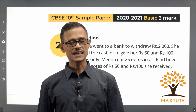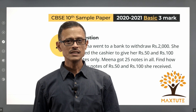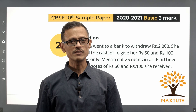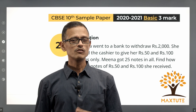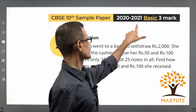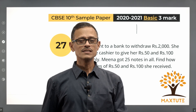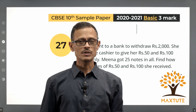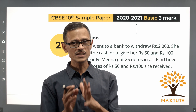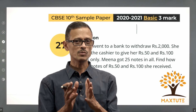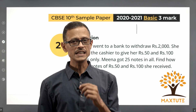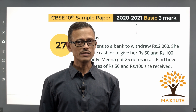Hello everyone. This is a CBSE class 10 math video solution to the sample question paper given by the board for the board examination to be conducted in 2021. It's a basic version of the paper. We are looking at a three-mark question — it's an easy word problem from the chapter on a pair of linear equations in two variables.